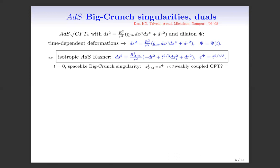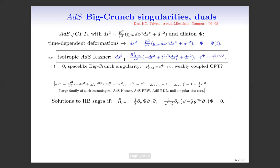Before getting there, it's useful to look at the bulk deformations more closely. The isotropic ADS-Kasner is one concrete class of models. Actually there's a large family of such cosmologies — a more general class of spacetimes where we embed the entire Kasner family. There are also ADS-BKL singularities and null singularities.